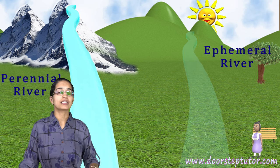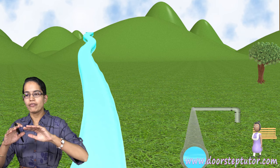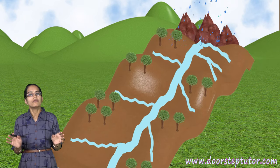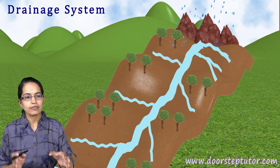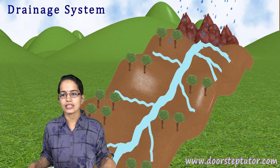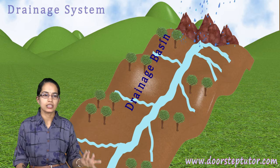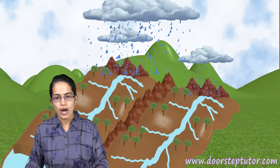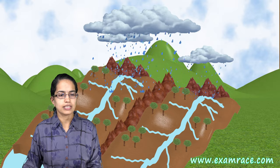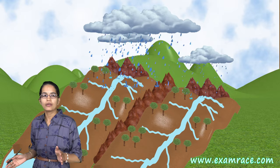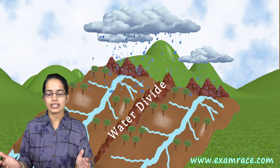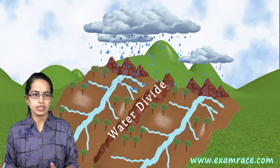The water that flows into a river or any channel is called drainage. When you have a network of such rivers flowing in, we call it a drainage system. The drainage basin is the area drained by a river and its tributaries. When you have two river basins side by side, the region between them is called a water divide.